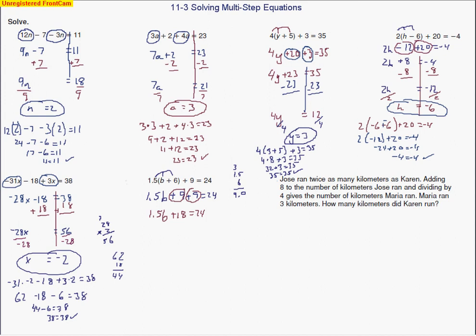Subtracting 18 from both sides gives me 6. So now I've got 1.5b equals 6. Now I've got the division problem: dividing by 1.5. Setting up the division, I move the decimal over one space, add a zero, and 15 goes into 60 four times. So b equals 4.